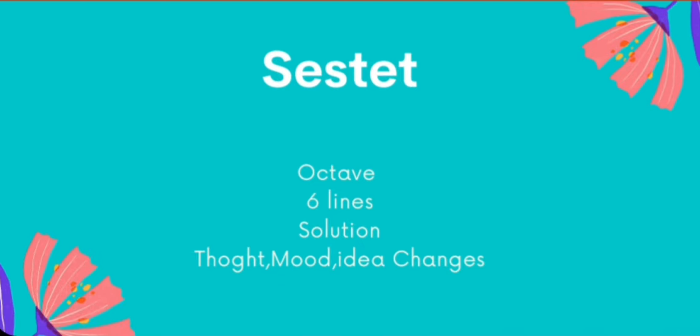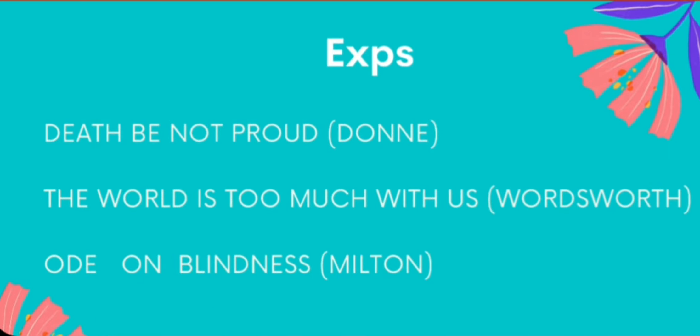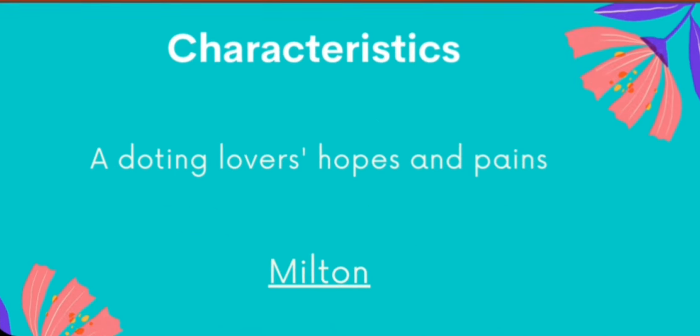The best examples of the Petrarchan sonnet in our syllabus are: 'Death Be Not Proud' by Donne, 'The World Is Too Much with Us' by William Wordsworth, and 'On His Blindness' by Milton.